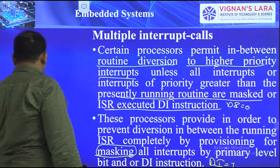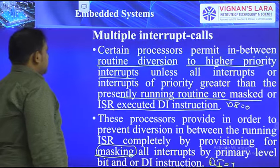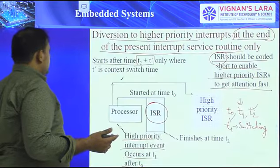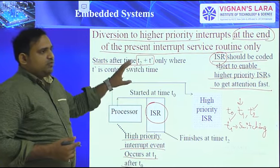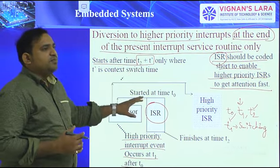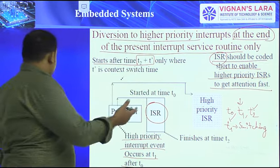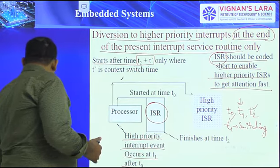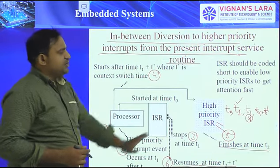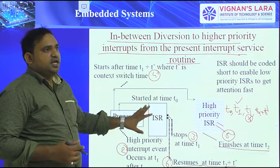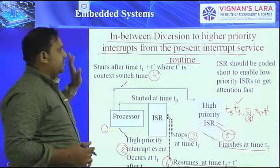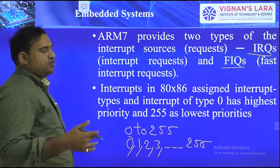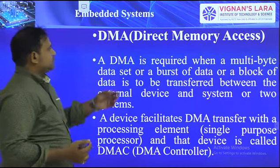This discussion has been about multiple interrupts — how N number of interrupts are handled, how we mask, enable, and disable interrupts. We took two examples: one with maskable interrupts completing the ISR before servicing the highest priority, and one with non-maskable interrupts where the currently running ISR is stopped to immediately service the highest priority interrupt.